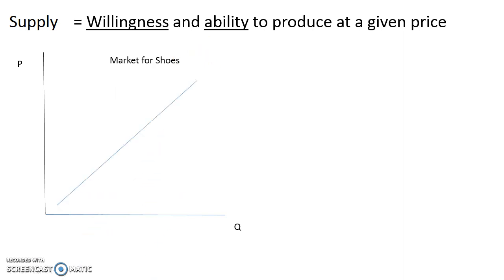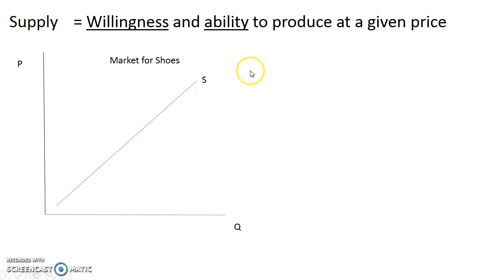The supply curve is upward sloping, labeled with an S. You could spell out 'supply,' but the most efficient thing is just to put an S. At a given price, we're looking at the willingness and ability to produce or supply the product.